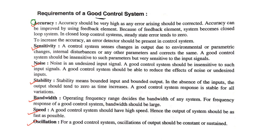Now speed: a good control system should have high speed, hence the output of the system should be as fast as possible. If the speed of the control system is high then the output response of the control system is very good. High speed is desired for a good control system and that is another requirement of a good control system.